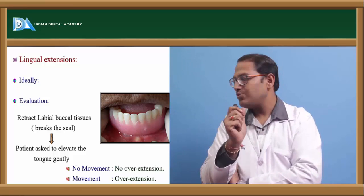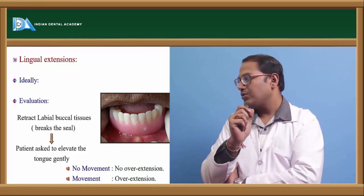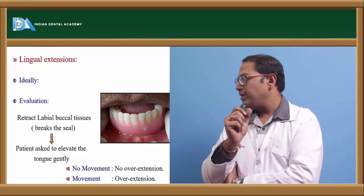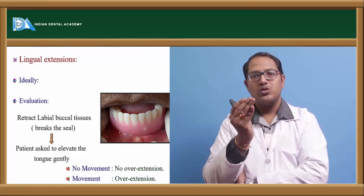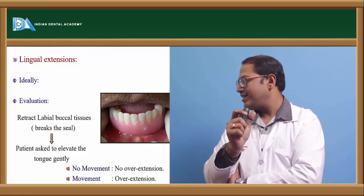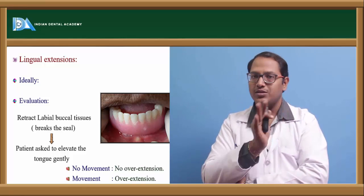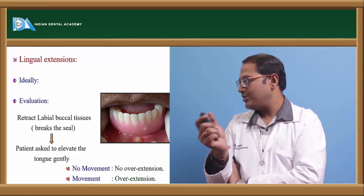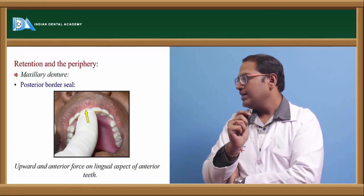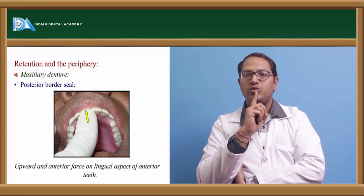For intraoral examinations: labial and buccal extensions should be correctly extended — not over-extended, which causes bad labial fullness, nor under-extended, which creates a depression giving an aged appearance. For the posterior palatal extension, mark the anterior and posterior vibrating lines, transfer them to the denture, and check for under or over extension. Place a mouth mirror at the posterior palatal seal and ask the patient to say 'i' — any saliva percolation indicates under-damming that needs correction.